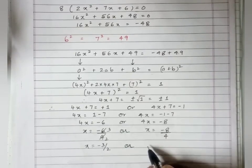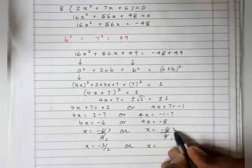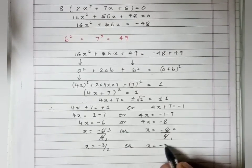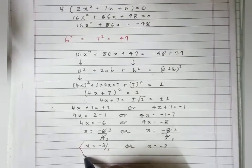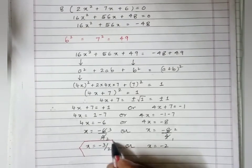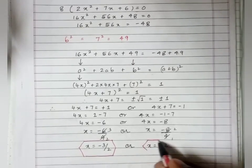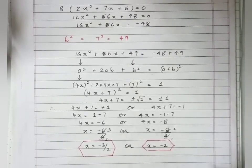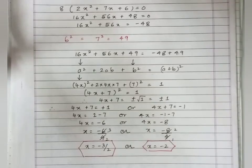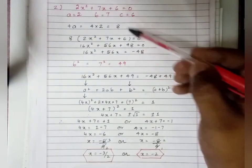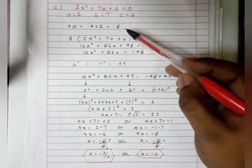So the roots are x = -3/2 or x = -2. These are the two roots of the quadratic equation. This is the simplest way of finding roots by completing the square method.